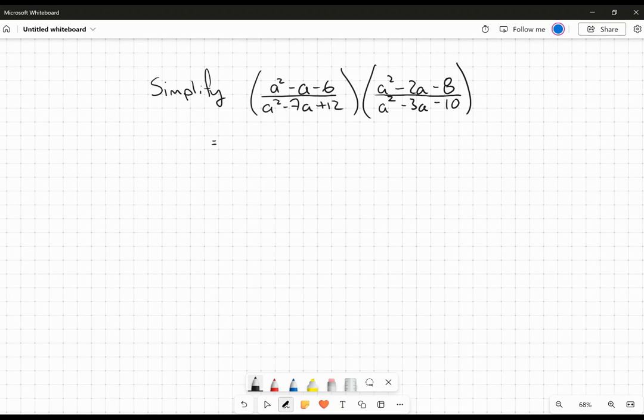So the very first thing I'm going to do when I'm simplifying this is I'm going to factor all of the pieces here. So I'm going to factor this numerator, this a squared minus a minus 6. We're looking for factors of negative 6 that differ by 1. That's probably going to be one of your first guesses to think 2 and 3. And then in order for that sum to be negative, the 3 has to be negative. So there we go.